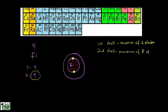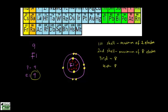The second shell has a maximum of eight electrons. The third and fourth shells are also eight — everything else is eight except the first shell. So we put seven on the second shell: one, two, three, four, five, six, seven. Seven on the outside plus two from the inside equals nine total electrons.